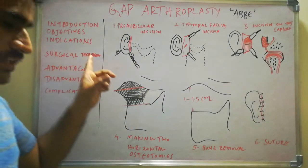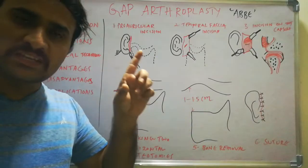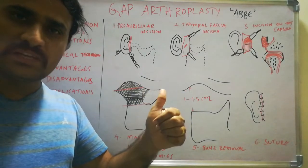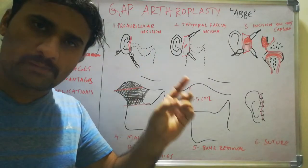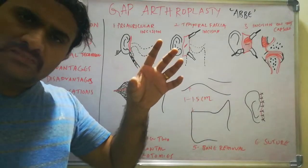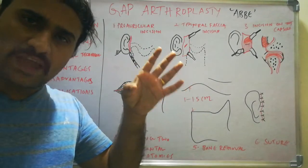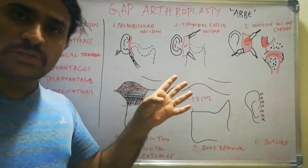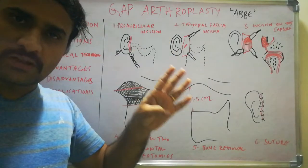Coming to the surgical technique, we first discuss surgical approaches. There are many approaches to access the TMJ, including sub-mandibular, post-tragal, post-auricular, and NRL approaches. However, the basic one is the pre-auricular approach, and in this video we will describe the gap arthroplasty procedure through the pre-auricular approach.